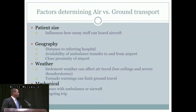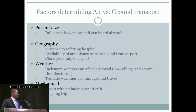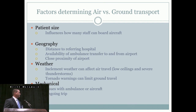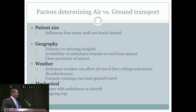Factors determining air versus ground include patient size — if they're too large for the plane, we take the ambulance. Geography and distance to the referring hospital matter, as does availability of ambulance transfer to and from the airport and proximity of the airport. Weather is a major factor: inclement weather, low ceilings, and severe thunderstorms affect air travel, while tornadoes can affect ground travel. Mechanical issues with an ambulance or aircraft may also determine your choice. If the Citation Bravo or the air medical hawker is unavailable, we usually take an ambulance.